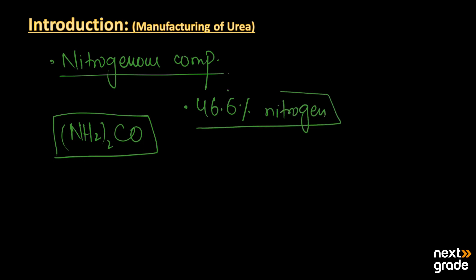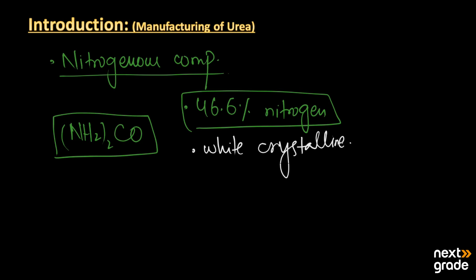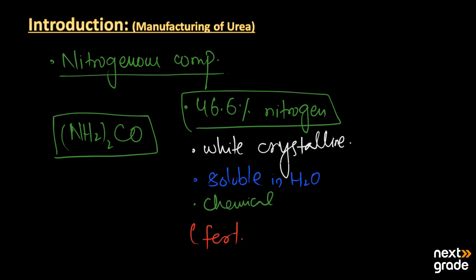Urea is basically a white crystalline solid. It is highly soluble in water. It can also be used for the preparation of many important chemicals, meaning it can serve as a raw material. However, the major use of urea is as a fertilizer to provide nitrogen to the soil — about 90 percent of urea is used as a fertilizer.